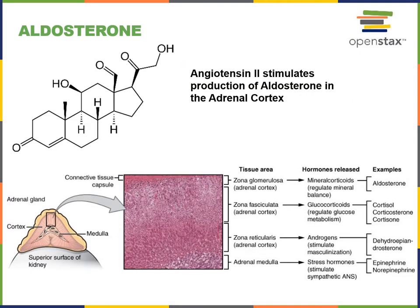Aldosterone is a steroid hormone secreted by cells in the zona glomerulosa of the adrenal cortex. It is also known as a mineralocorticoid and binds to an intracellular receptor known as the mineralocorticoid receptor. The stimulus for aldosterone production is the renin-angiotensin mechanism leading to angiotensin 2, which binds to receptors on adrenal cortex cells to stimulate aldosterone production. Additionally, elevated plasma potassium concentration, also known as hyperkalemia, is also a stimulus for aldosterone production.